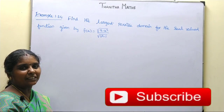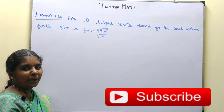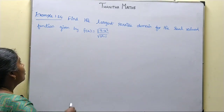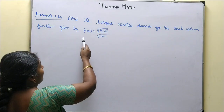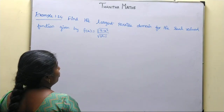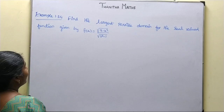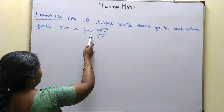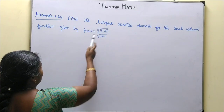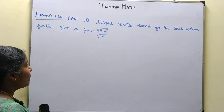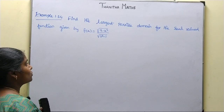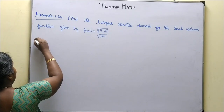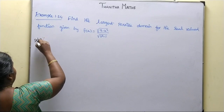Students, let's look at Example 1.24. Find the largest possible domain for the real-valued function given by f(x) = √(9 - x²) / √(x² - 1). So largest possible domain — that means we need to find the values of x where we can define the domain.